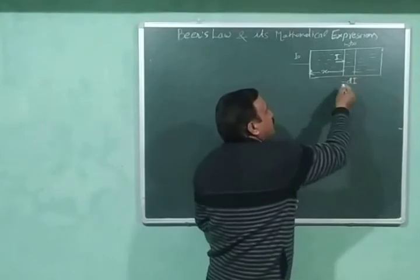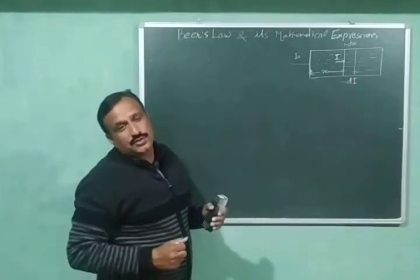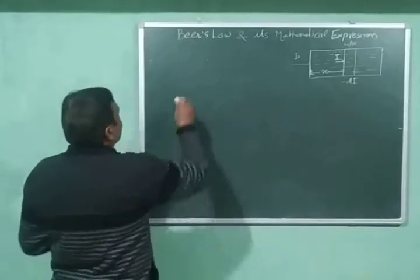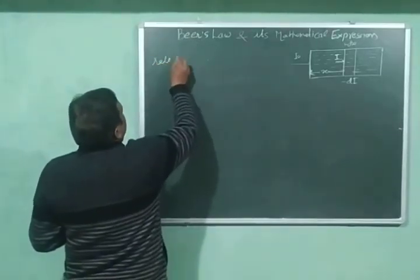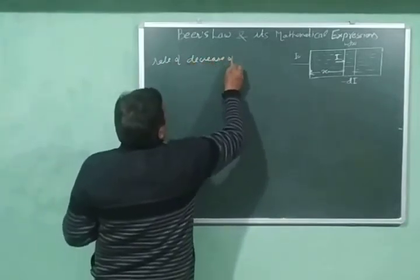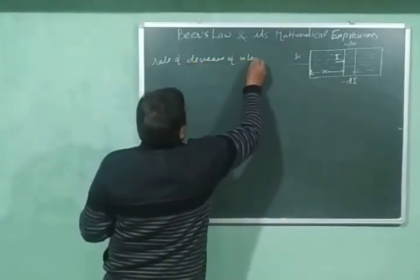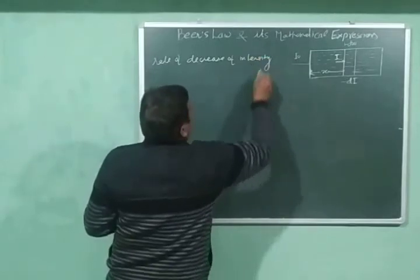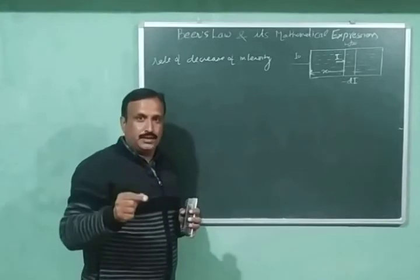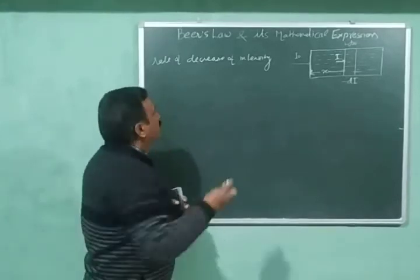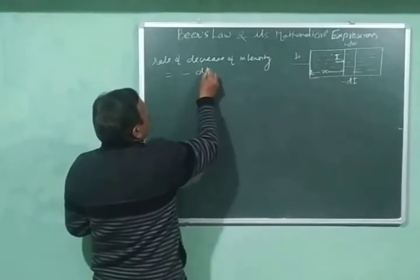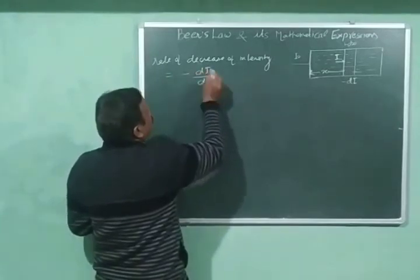After passing through this small thickness dx, the intensity of the radiations further decreases by a very small amount, −dI. The minus sign is there because the intensity is decreasing. So the rate of decrease of intensity with the thickness of the absorbing solution will be equal to −dI/dx.